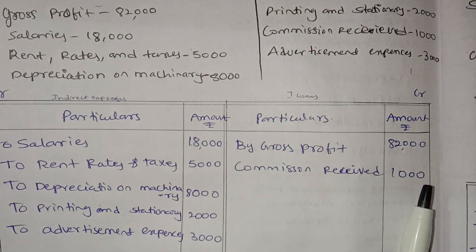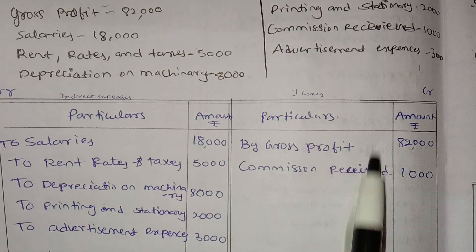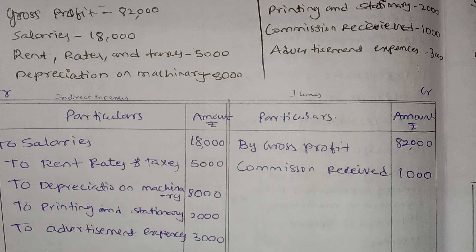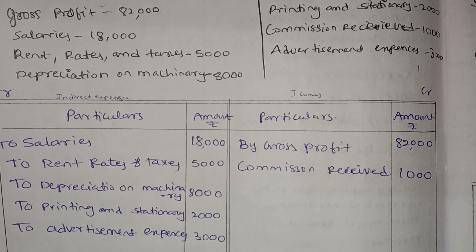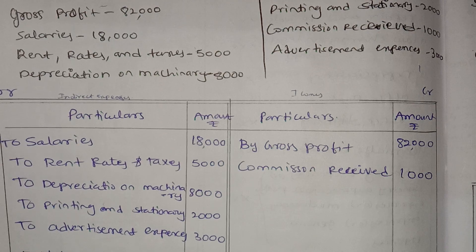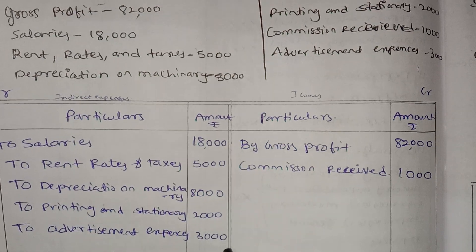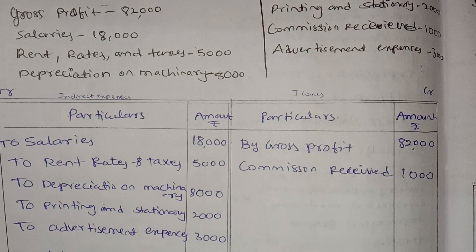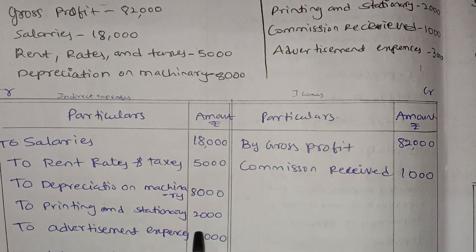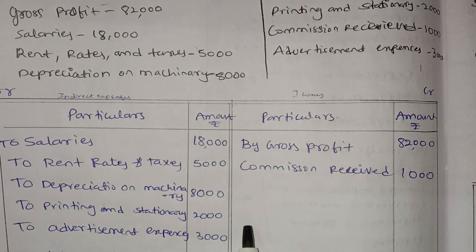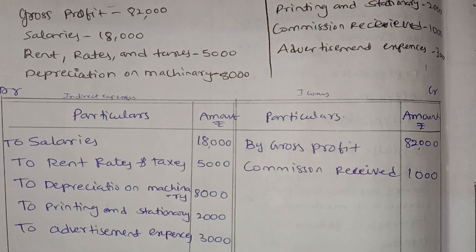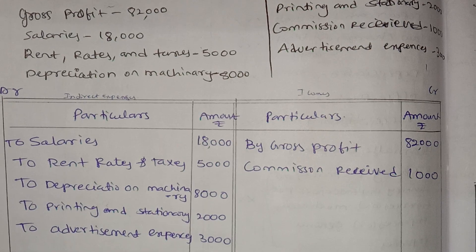Total cost is 83,000 rupees. Compare this to the debit side and credit side. Now we have net profit. So, 83,000 minus 36,000 — we will find the net profit. 83,000 minus 36,000 gives us the net profit.